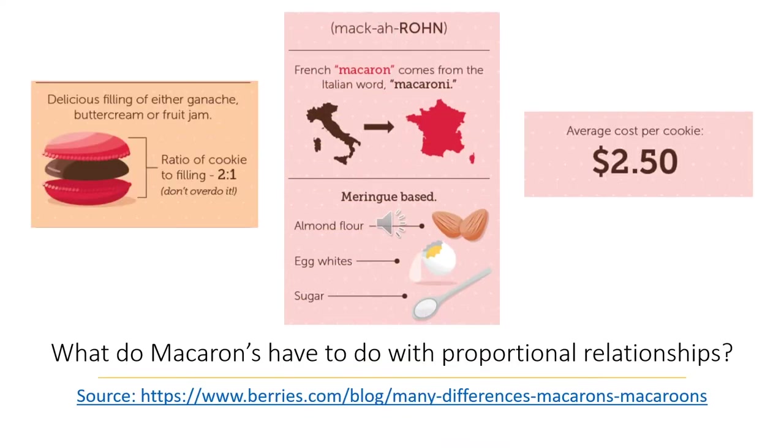And today we are lucky enough to have with us a French expert to tell us all about macarons. French macaron comes from the Italian word macaroni. It is meringue-based, and it has a delicious filling of either ganache, buttercream, or fruit jam. The ratio of cookie to filling is 2 to 1, and the average cost per cookie is $2.50. Wow, that's a lot of rates and ratios for a cookie.